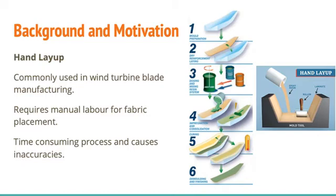Manufacturing processes of these blades are very complex and time consuming. The most common method to manufacture blades is a technique referred to as hand layup, which consists of six steps. These steps are mold preparation, dry reinforcement laying, dosing and mixing resin system, impregnation and consolidation, curing, and finally demolding and finishing. The process is mostly manual and thus mainly conducted by humans, which creates inaccuracies between blades and also slows down the manufacturing process significantly.